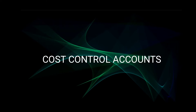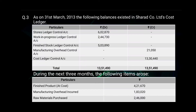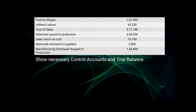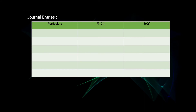Hello everyone, welcome to my channel Stream Commerce. Today I am going to teach cost control accounts. Let us start with question number three. As on 31st March 2013, the following balances existed in Sharat Company Limited cost ledger. The balances are given for stores ledger, work in progress ledger, finished stock ledger, manufacturing overhead, and cost ledger. During the next three months, the following items arose. We will show the necessary control accounts and trial balance. First, let us start preparing journal entries.